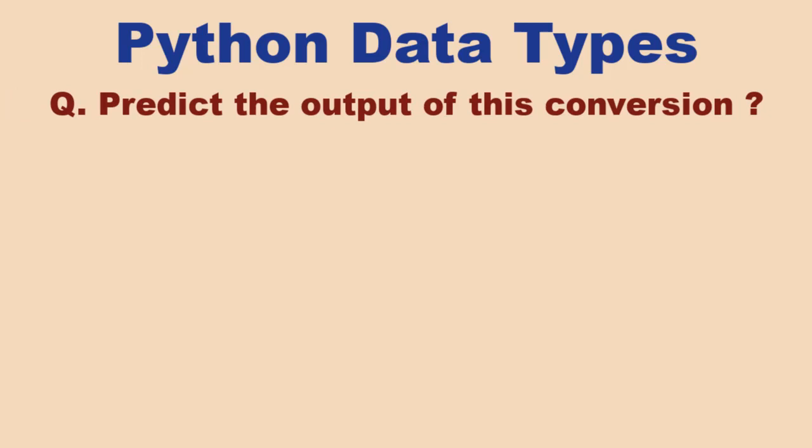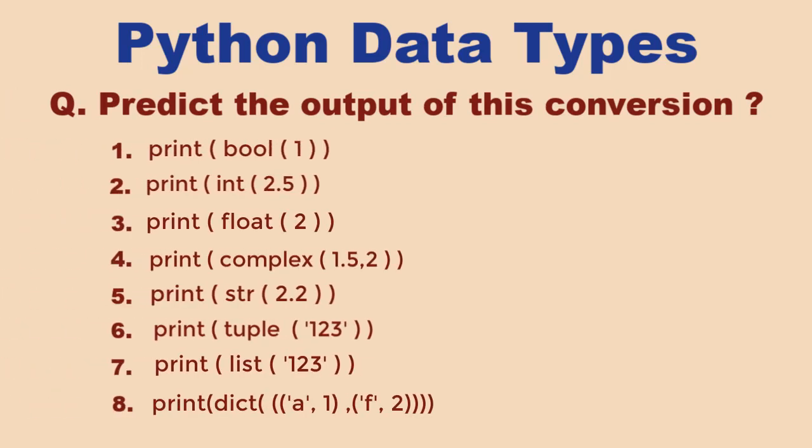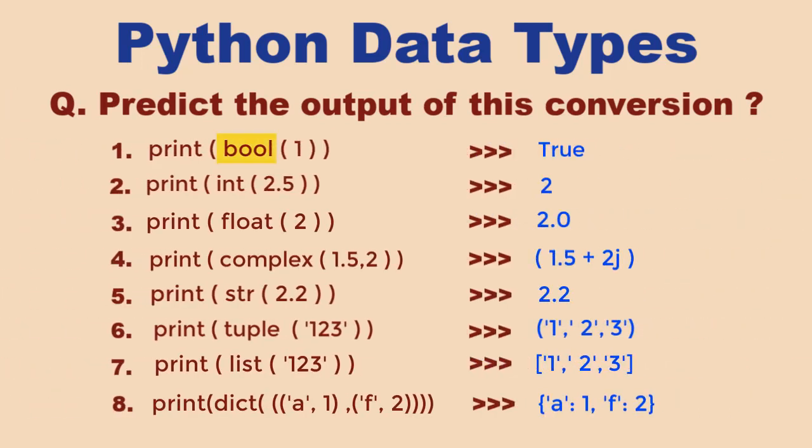There are also a set of functions which are available to convert one type to another: bool to boolean, int to integer, float to floating point, str to string, etc. We have similar functions for list, tuple, and dictionary, but we will cover them separately in another video.